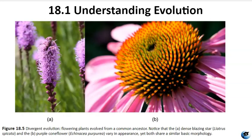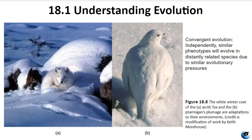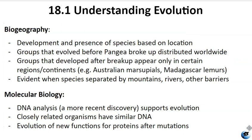Figure 18.5 gives an example of divergent evolution — flowering plants that evolved from a common ancestor but now vary greatly in appearance even though they have the same basic morphology. Figure 18.7 shows homologous structures, including detailed records of human and horse evolution and similarities in anatomical structures like whale flippers. Species like the arctic fox and the ptarmigan have developed white phenotypes during winter to blend with snow and ice, even though they are totally unrelated. Biogeography showcases how the distribution of organisms aligns with tectonic plate movements. Molecular biology further supports descent with modification, as DNA sequences demonstrate the relatedness of organisms and the evolution of new functions through gene duplication.